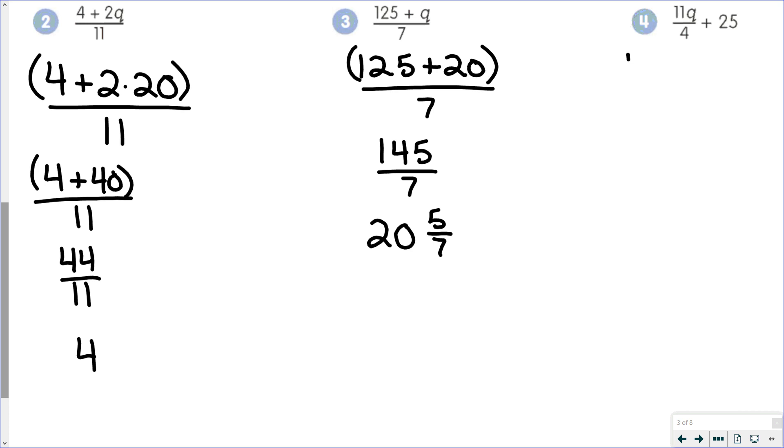And then 11 times 20 over 4 plus 25. 11 times 20 is 220. 220 over 4 is 55. And then 55 plus 25 is 80.